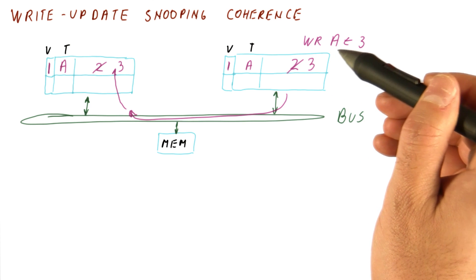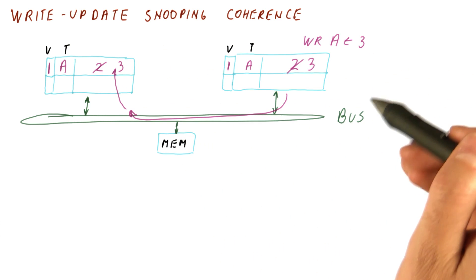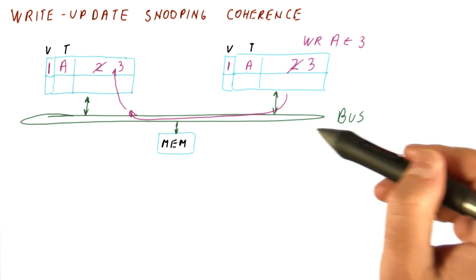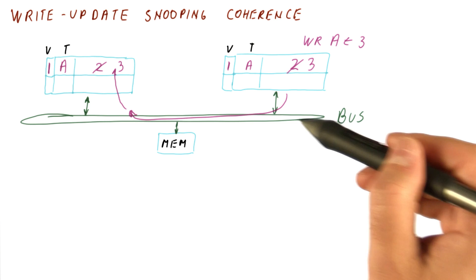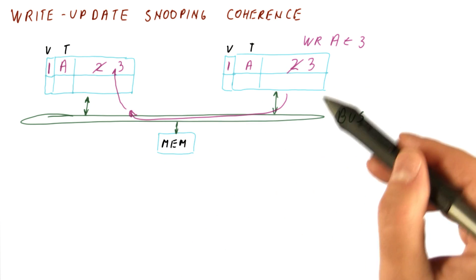The write update is ensuring that writes are seen by reads on all cores. And the snooping of the common bus and the serialization on that bus, basically going one at a time to the bus, is guaranteeing that everybody sees the same order of writes.